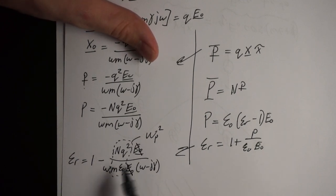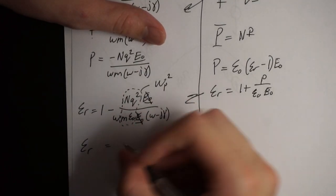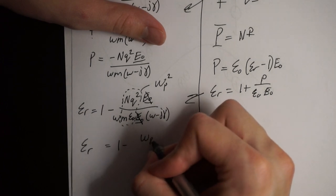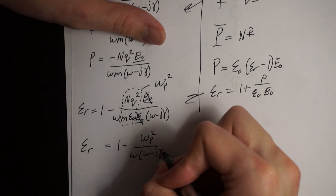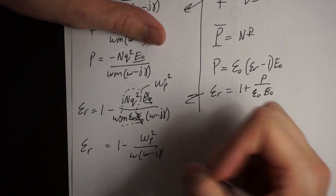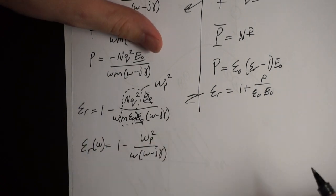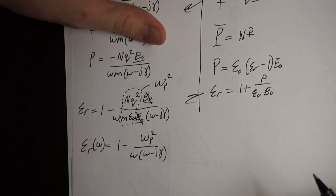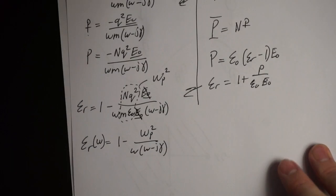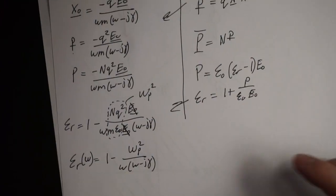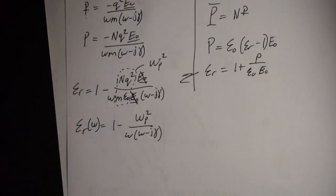Rewriting this out: εᵣ = 1 − ωₚ² / [ω(ω − jγ)]. We can see that εᵣ is actually in terms of frequency, meaning our permittivity is frequency dependent. This means our permittivity will be different depending on the frequency of the electromagnetic wave applied.